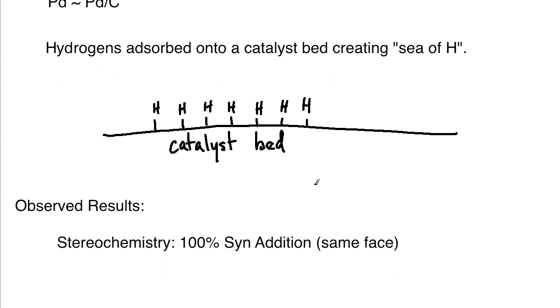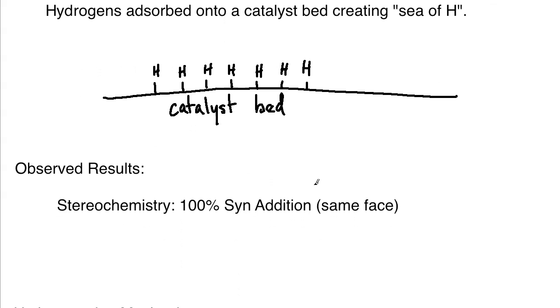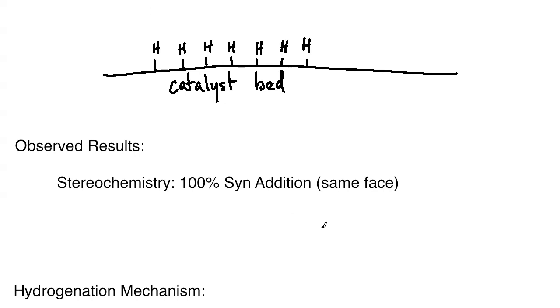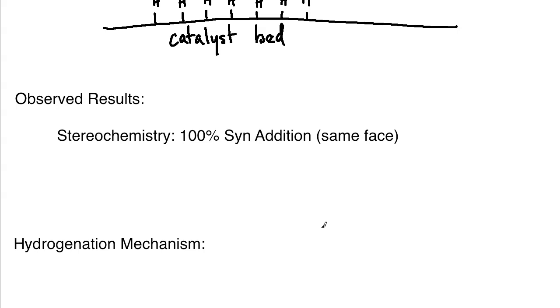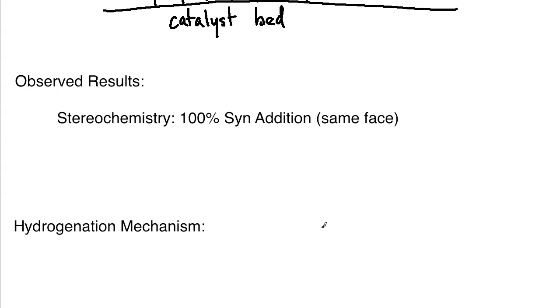The observed results here is that the stereochemistry, it's 100% syn addition. As a reminder, syn addition means on the same face or the same side of the molecule. So we saw this previously in the hydroboration, the BH3 example, where the hydroxyl group and the hydrogen would add to the same face of the molecule. We see the same thing here with the hydrogenation. We get both hydrogens that are attached on the same side or the same face of the alkene.